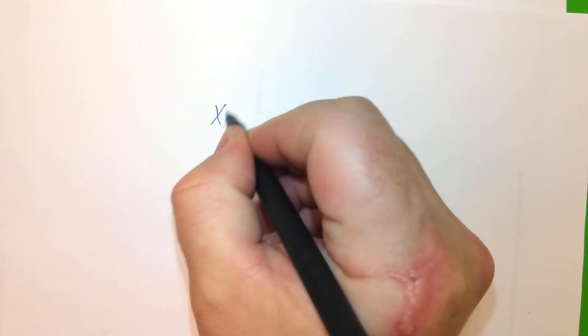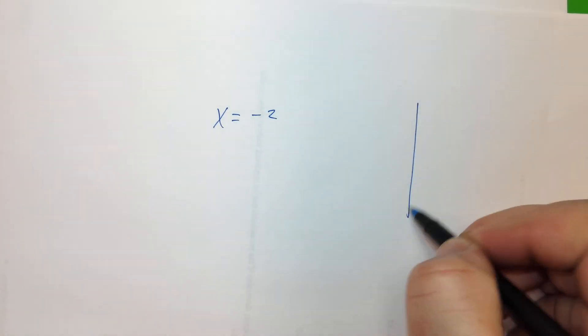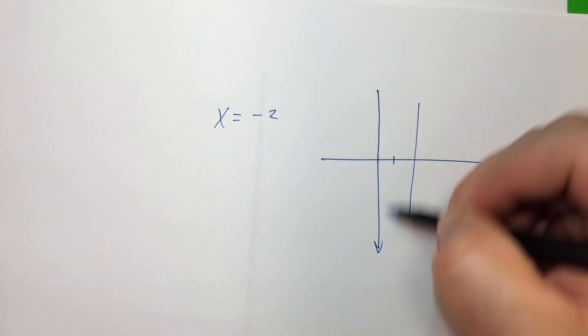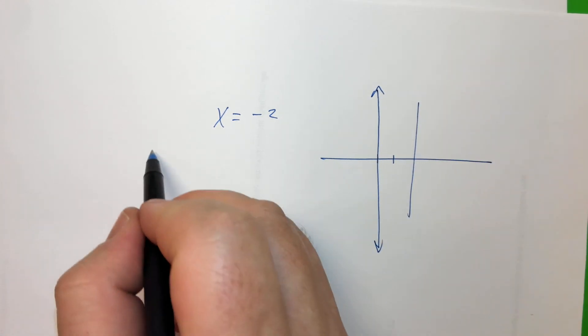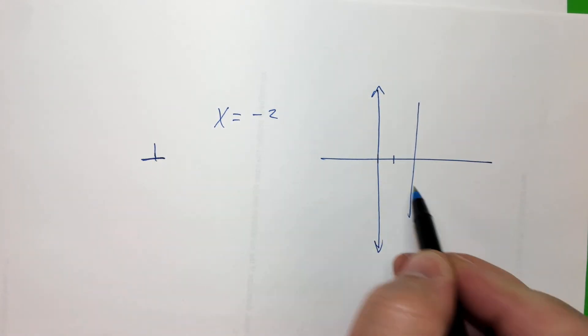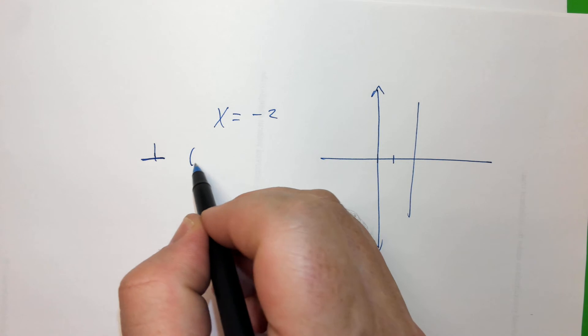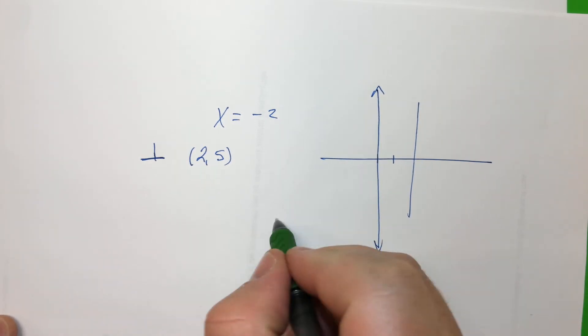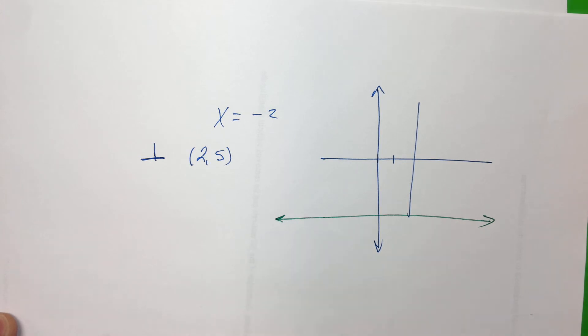So let's say we still had X equaled negative 2, right? Let's say that's 1. Let's say that's negative 2. Okay, and what if we needed a line that would be perpendicular to this and went through, what was it? 2, 5? Yeah. Okay. Now, perpendicular to vertical is horizontal. So I'm not going to draw the answer, but that would be perpendicular.